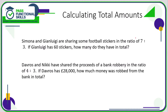In this question the ratio is seven to three, so Simone gets seven-tenths and Gianluigi three-tenths — we're dealing in tenths because seven plus three is ten. We're told that Gianluigi has sixty stickers, so we know that three-tenths of the total equals sixty. We want to find the total, which is the full ten-tenths. I can't easily go directly from three-tenths to ten-tenths, so I'm going to work out what one-tenth is — this is the part that is the stumbling block for most people.